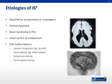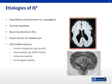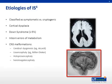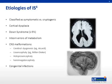Other CNS malformations that may result in infantile spasms include cerebral dysgenesis as seen in Aicardi syndrome, lissencephaly as in Miller-Dieker syndrome, holoprosencephaly as seen in the gross coronal section, and hemimegalencephaly. Congenital infections such as toxoplasmosis, syphilis, and cytomegalovirus are also potential causes.